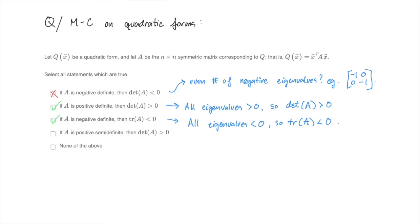Lastly, the fourth one. Suppose that A is positive semi-definite. Must the determinant of A also be positive? In this case, all eigenvalues of A are greater than or equal to zero, but they can still be zero. If this is the case, then the determinant will be zero, which isn't strictly positive. For example, what if A is just the zero matrix? This matrix is positive semi-definite, but the determinant is definitely zero. And for good measure, let's just cross off the none of the above option as well.